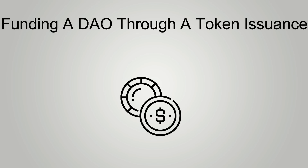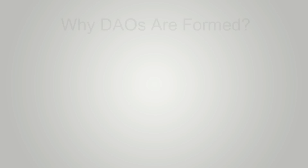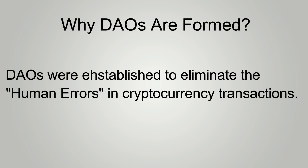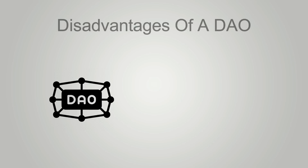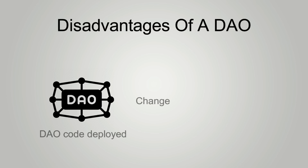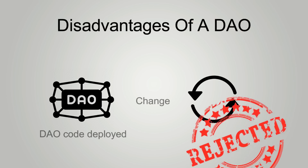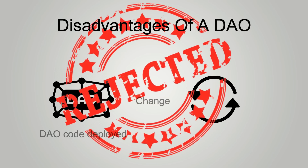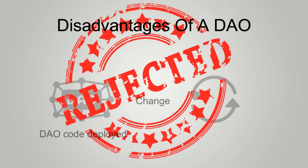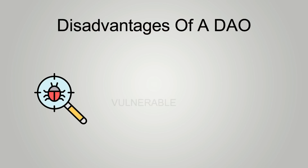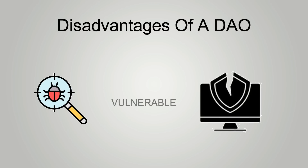DAOs were established to eliminate human errors and manipulation of cryptocurrency transactions. However, they have their fair share of weaknesses. Once the DAO's code has been deployed, it can't be changed by any member or unit unless the members authorize this change through voting. A disadvantage of this rigid arrangement is that when there are issues or bugs in the code that need to be fixed, the DAO remains vulnerable until a consensus is reached through voting by the members.